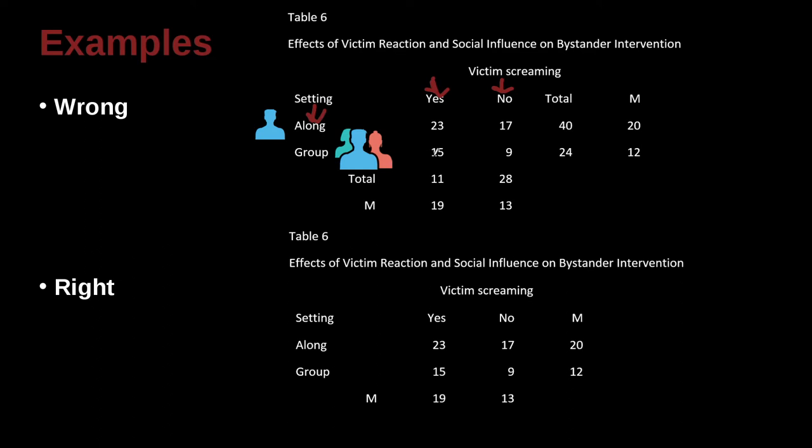And so what's happening here? Well, this number here would be in the group setting that was with other people, 15 times a person screamed. And nine times a person didn't scream when they were in a group. But when they were alone, not in a group, then it was 17 times screaming. Okay, that kind of makes sense. So what's the problem with this one?